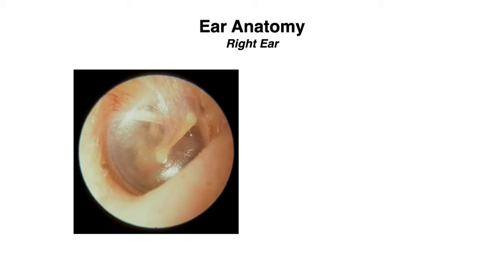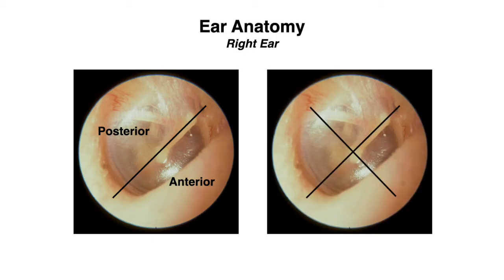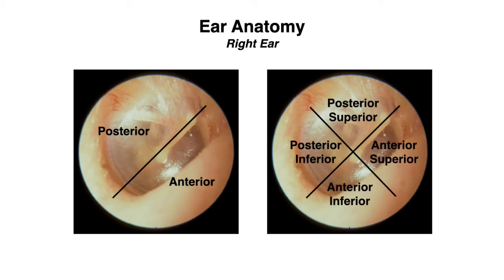Our tympanic membrane can be divided into four different quadrants. Starting by drawing a line straight through the malleus, this separates our eardrum into the anterior or front and the posterior or back regions. Drawing a perpendicular line through the middle of the eardrum gives us our four quadrants. The posterior superior quadrant is often considered the looser portion of the tympanic membrane, and it's often the area where you'll first see signs of bulging when there is middle ear pressure due to something like acute otitis media.